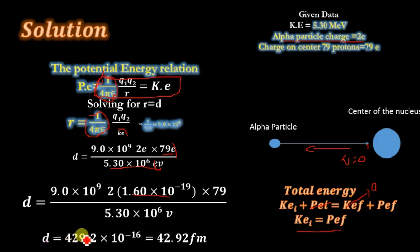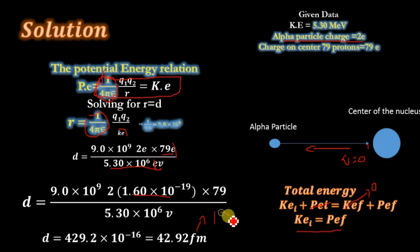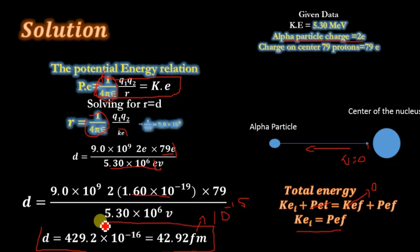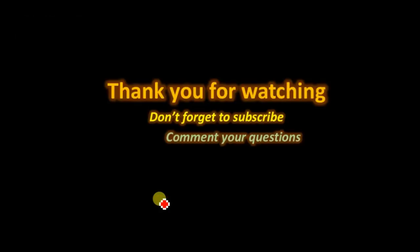The result gives d equal to approximately 4.29 times 10 to the power minus 14 meters. This is the distance of closest approach. Thank you for watching — don't forget to subscribe and comment your question.